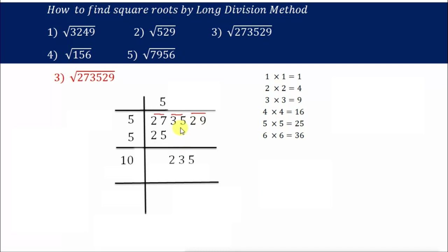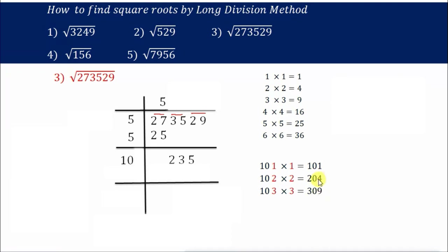5×5=25. Add 5 here: 5+5=10, and 27 minus 25 is 2. Bring down 35, giving 235. Now we have 10 here. Start pairing: 101×1=101, 102×2=204, 103×3=309 — that is greater. So 102×2 works for us. 102×2=204. Not forgetting, add 2 here. And 235 minus 204 equals 31.